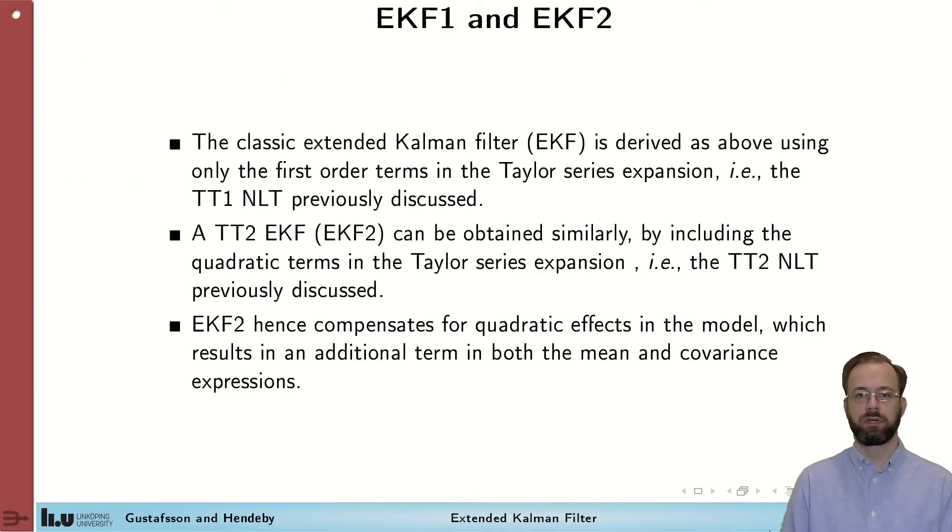You have just seen the classical way of deriving the extended Kalman filter, by linearizing the model and then applying the normal Kalman filter. The extended Kalman filter can also be derived using the TT1 transformation and lemma 7.1, in a way similar to we derived the unscented Kalman filter in that module. That motivates the name EKF1 that we sometimes use. If including also quadratic components in the Taylor series expansion of the model, before applying the Kalman filter, we get the extended Kalman filter 2. That can also be derived using the TT2 transformation and lemma 7.1.